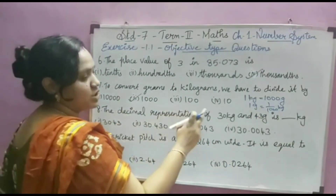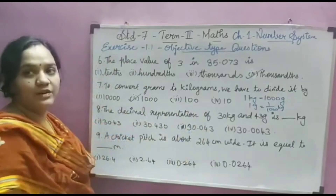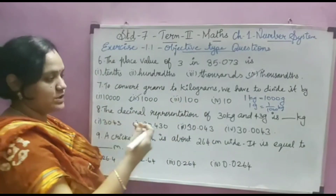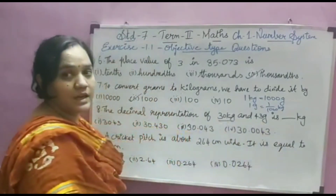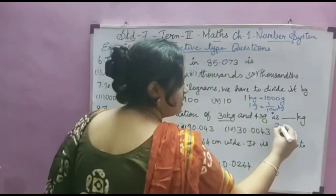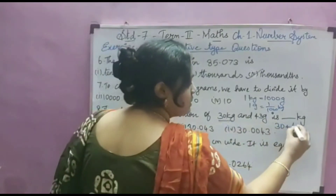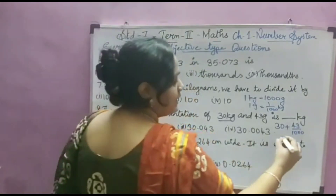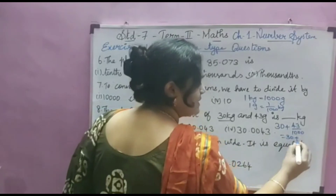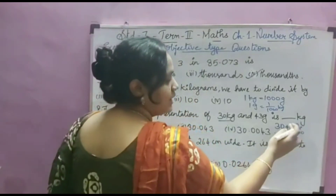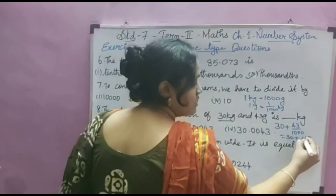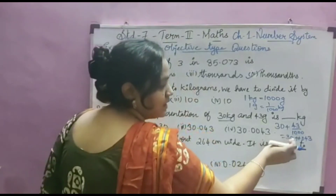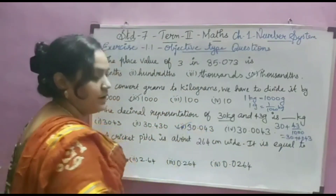Third objective question: the decimal representation of 30 kg and 43 grams. To convert grams to kilograms, divide by 1000 — that's 3 zeros, so keep the point before 3 digits. 30 kg stays as is, and 43 ÷ 1000 gives 0.043. So 30 + 0.043 equals 30.043. That is the answer.